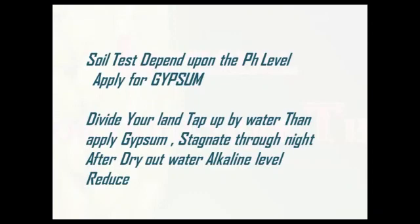The next method is applying gypsum. Before applying gypsum, please do your soil test so you can understand how much alkalinity is in your land — this also reduces costs and prevents over-application. How do you apply gypsum? First, divide your land, add water to the top, then apply gypsum. Let it stagnate overnight in water. After morning, without draining the water, the alkaline level is automatically greatly reduced. So I have shown two points: green manure and gypsum — both are very important.